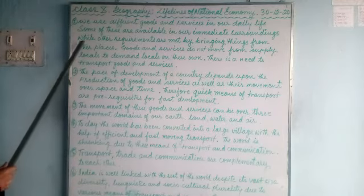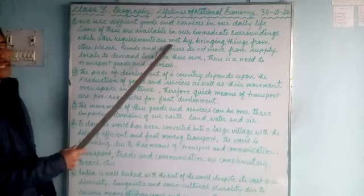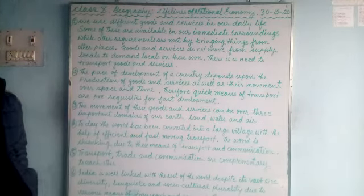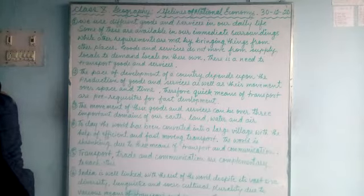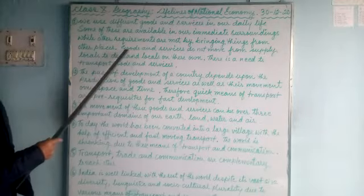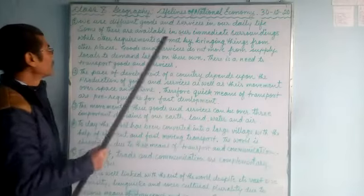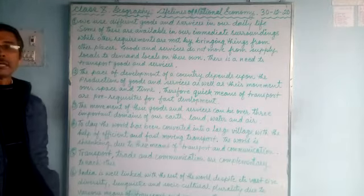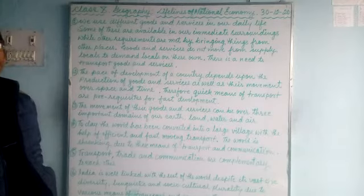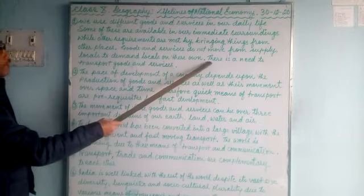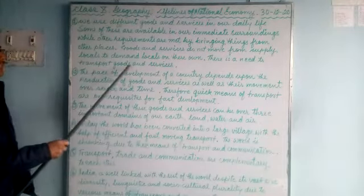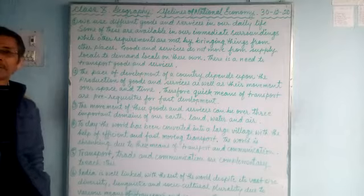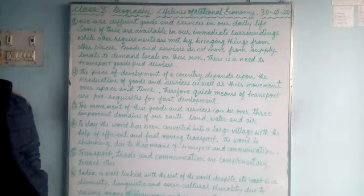Those goods and services have to be transported from the manufacturing hub or manufacturing areas to the markets or where the consumers are. Many of the goods are not produced locally — they have to be brought from other areas where they are produced. Goods and services do not move from supply locations to demand locations on their own; they have to be transported. So there is a need for transportation.